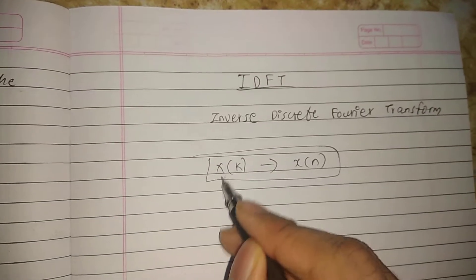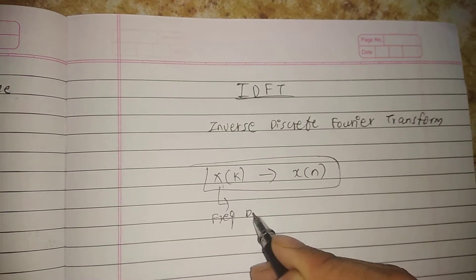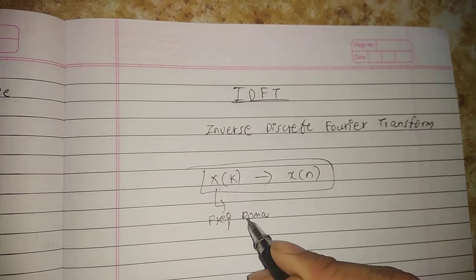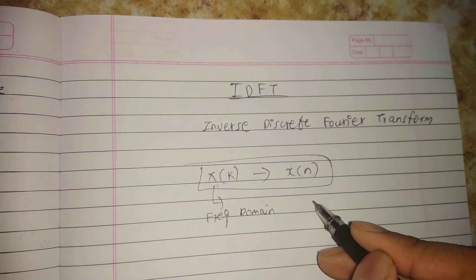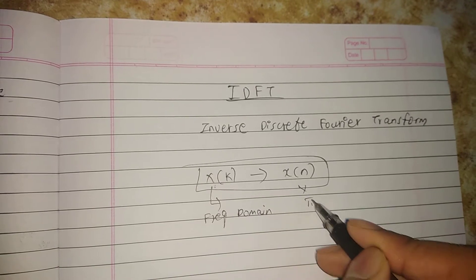Frequency domain components are converted into time domain. x is the time domain representation.